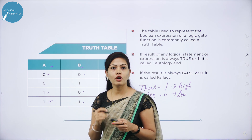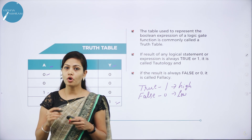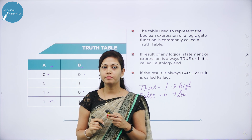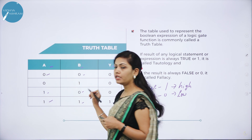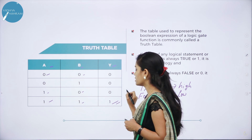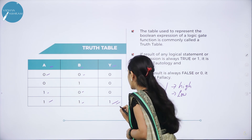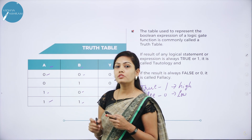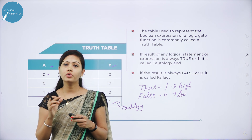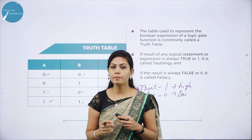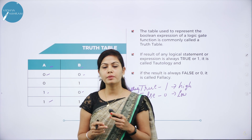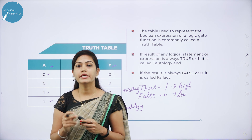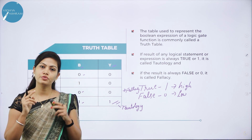If the result of any logical statement or expression is always true or 1, it is called tautology. If the result is always false or 0, it is called falsity. 1 represents true value and 0 represents false value. This is the truth table — the table of truth values of truth functions.